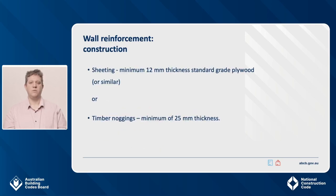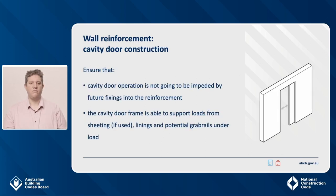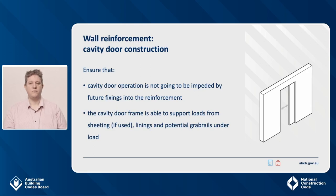Reinforcing must be constructed using a minimum 12 mm thick standard grade plywood or similar, or a minimum of 25 mm thick timber noggings. Nogging sizes are minimum — larger sizes are permitted, for example offcuts from framing timber. Care is required when locating a cavity slider door in a wall requiring reinforcement adjacent to a fixture, to ensure the door operation is not impeded by future fixings. It is also important to ensure the frame can support sheeting, linings and potential grab rails when being used. Other noggings or sheeting can provide the wall reinforcement. In this image, the location of nogging is shown, located at one side to the end of the bath and to an area alongside the length of the bath. If sheeting is preferred, the required reinforcing location would look like this.